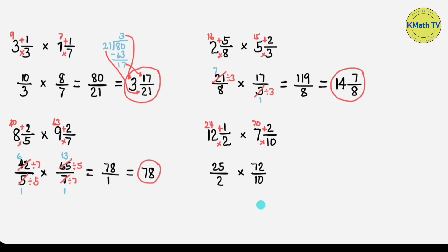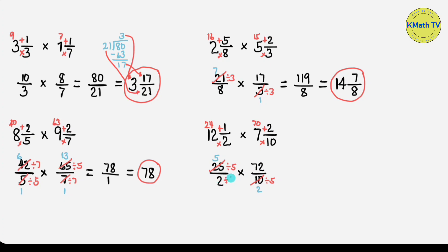We already changed the mixed numbers to improper fractions. Next step is to multiply, but in this problem we can use cancellation before multiplying. We can cancel the numerator 25 and the denominator 10 because their GCF is 5. Dividing: 25 divided by 5 equals 5, and 10 divided by 5 equals 2. We can also cancel 72 and 2 by dividing by their GCF of 2: 2 divided by 2 equals 1, and 72 divided by 2 equals 36.